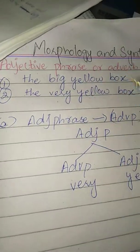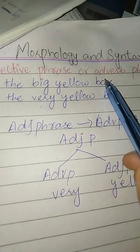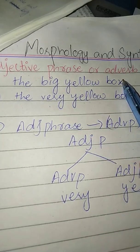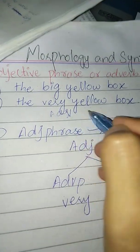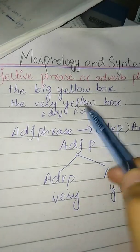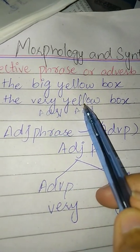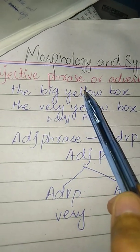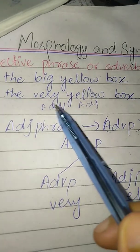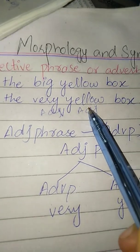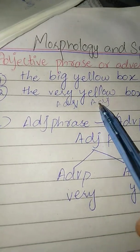In the first example, we have 'big' and 'yellow' — what are both? They are adjectives. The box is modified, and the yellow is also modified. The second example has an adverb and adjective: 'yellow' is modified but 'very' is also modified. In the upper example, 'big' and 'yellow' are both adjectives and the box is modified. In the lower example, 'very' and 'yellow' are the modifiers.